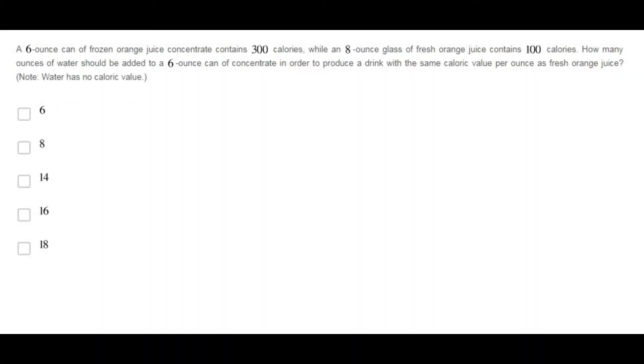A six ounce can of frozen orange juice concentrate contains 300 calories, while an eight ounce glass of fresh orange juice contains 100 calories. How many ounces of water should be added to a six ounce can of concentrate in order to produce a drink with the same calorie value per ounce as fresh orange juice?